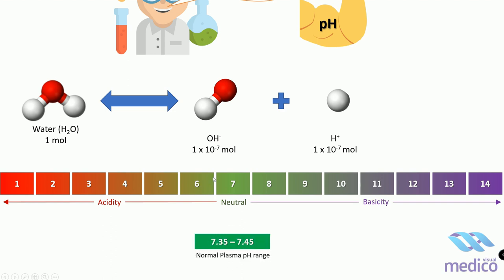Now the normal plasma pH, the normal pH range of our blood or plasma, is 7.35 to 7.45. If the pH decreases from 7.35, it is called acidemia, and if pH increases from 7.45, it is called alkalemia.